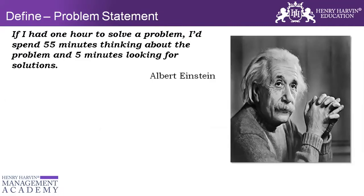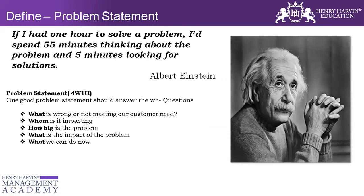The second thing is the problem statement or opportunity statement. A good or effective problem statement should follow the formula 4W1H. The first W is 'what' — what is wrong or not meeting expectations. Then 'who' it is impacting, what is the impact, and what can we do now. H is how big is the problem. If these four components are mentioned, you would call it a perfect problem statement.